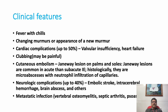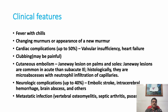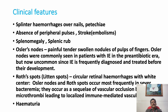Clinical findings include high-grade fever, chills, rigors, and sweating. Cardiac complications include new onset mitral or aortic regurgitation, increasing stenotic lesions, and changing or new murmurs. Painful clubbing and cutaneous embolism or Janeway lesions can occur. Neurological complications include embolic stroke, intracerebral hemorrhage, mycotic aneurysm hemorrhage, brain abscess, and seizures. Metastatic lesions such as osteomyelitis, septic arthritis, and psoas abscess are also possible.